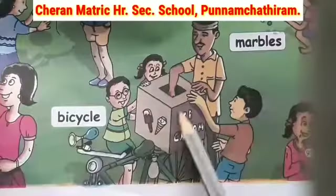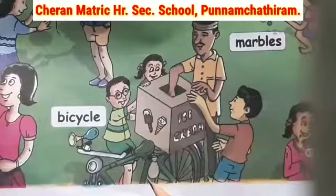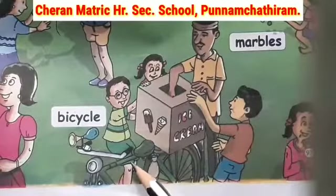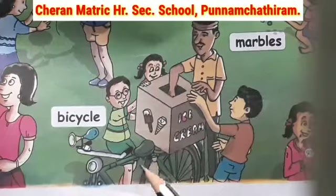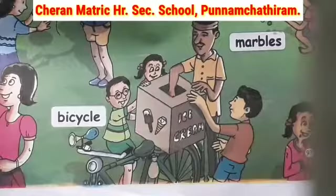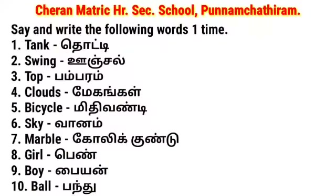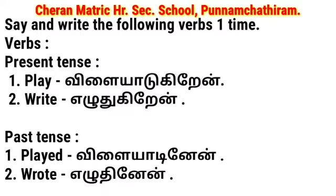B-I-C-Y-C-L-E — bicycle. Bicycle means midi vandi. We used to say it as cycle. In this picture, where is the bicycle? Yes, this is bicycle. Okay goodies, we will see the remaining in the next class. Let's see today's homework. Say and write the following words one time.